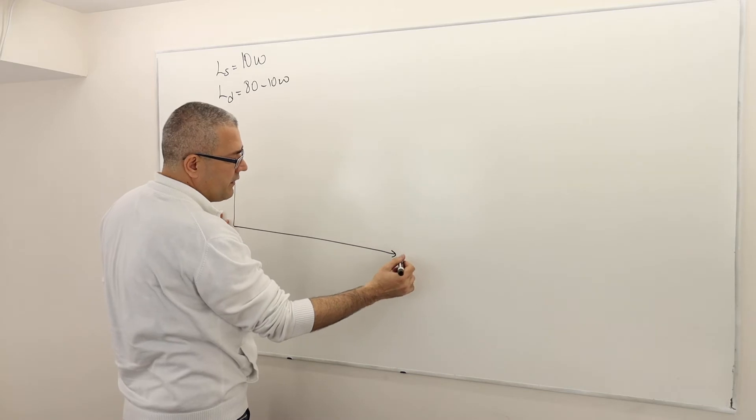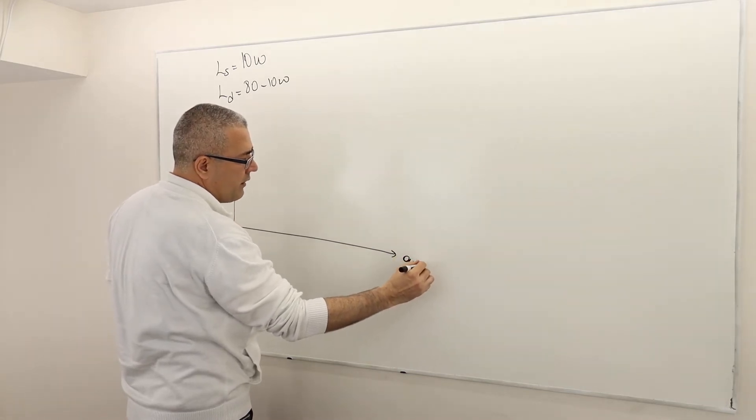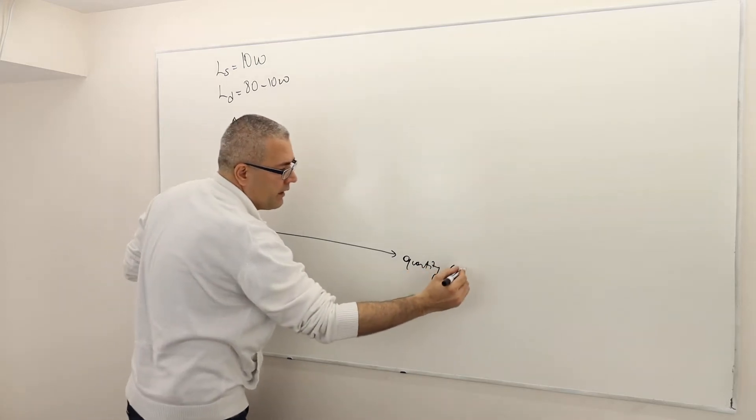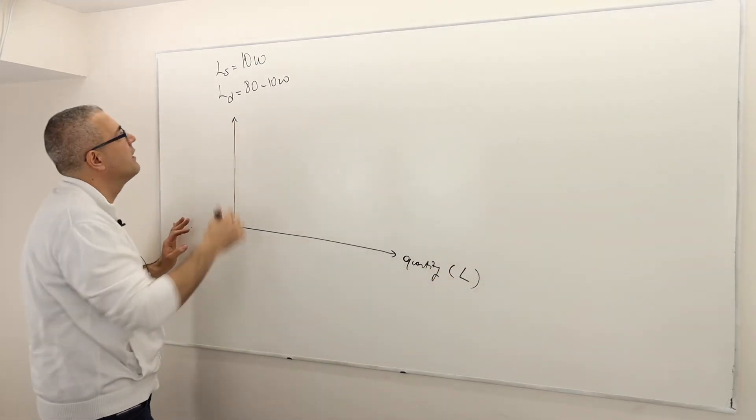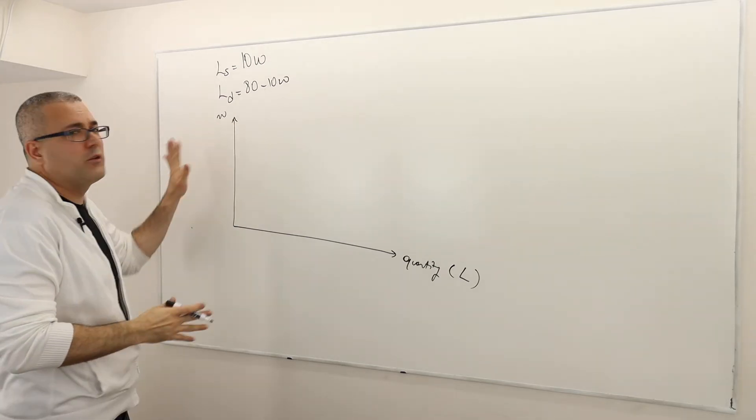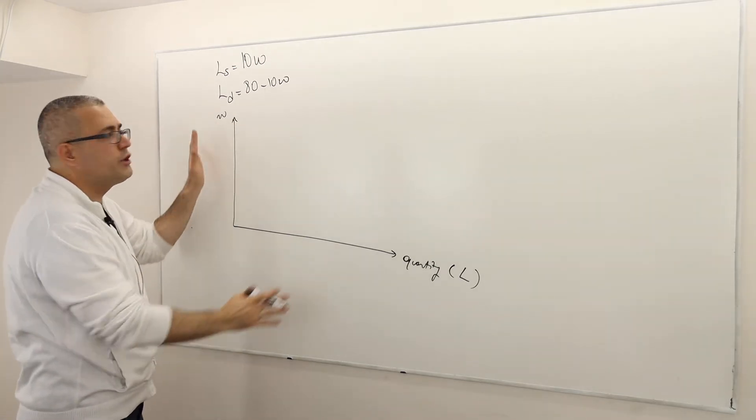So here, this is the quantity. As usual. So meaning here, we denote the quantity by L. And this one is price. And here, we denote the price by W. So be careful about which goes where.